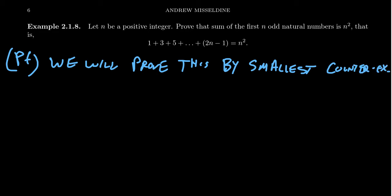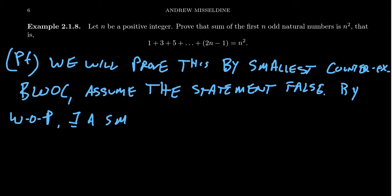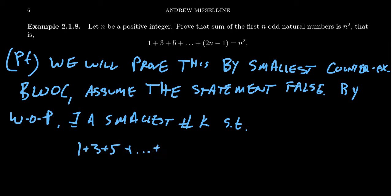How does one do that? By way of contradiction, assume the statement is false. Then by the well-ordering principle, there exists a smallest counterexample — let's call it k — a smallest number k such that 1 plus 3 plus 5 going all the way up to 2k minus 1 does not equal k squared.